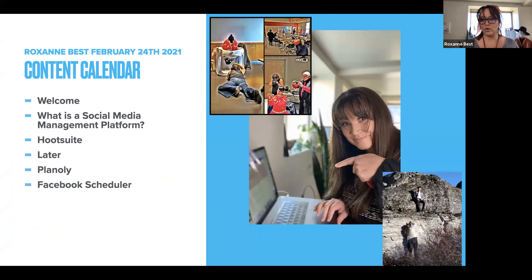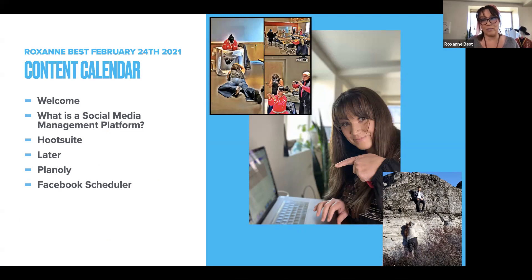If you don't know who I am, my name is Roxanne Best. I'm an enrolled member of the Colville Confederated Tribes here in Washington state. I'm a photographer, a yoga instructor, and a business consultant or trainer. I help people develop skills for their small businesses. Usually that's my workstation you can see in that picture of me pointing my finger, and there are a couple of shots of me doing photo shoots.